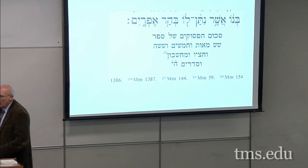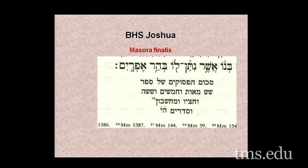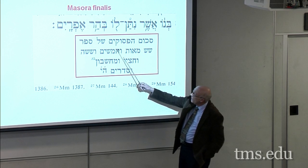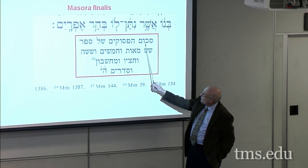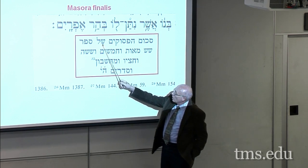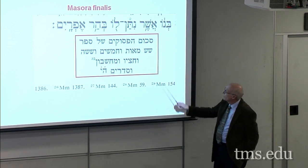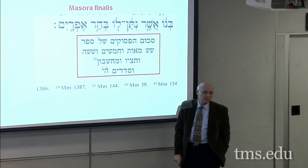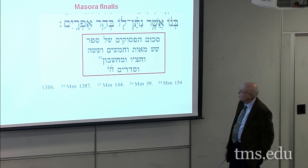Then we have at the end of every one of the books of the Hebrew Bible what is called the Masora Finalis — the final Masora. This is fascinating. When I was doing Bible translation work in Bangladesh, I would use this to help me know how many verses we needed to get done over how many days in order to complete a certain book. What we have here is 'sekhum hapesukim shel sefer' — the total of the verses belonging to the book. Here it's the book of Joshua: 656 verses.